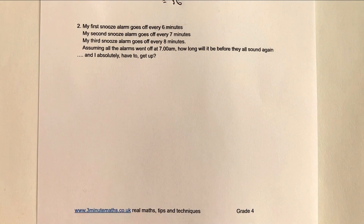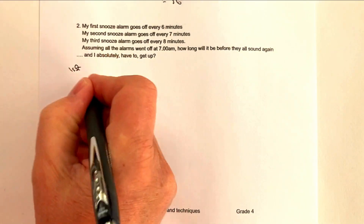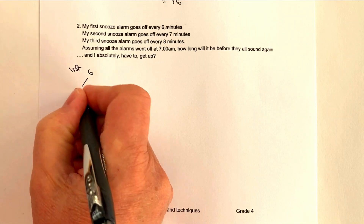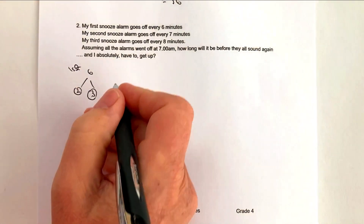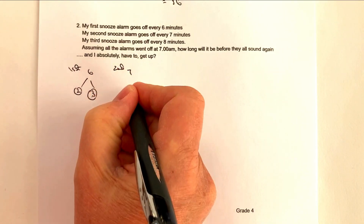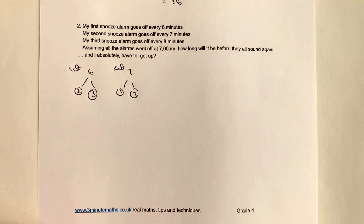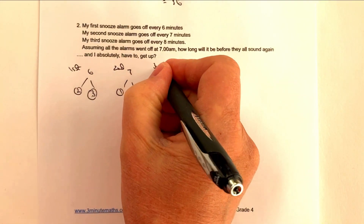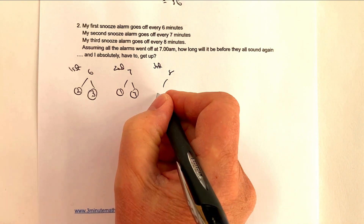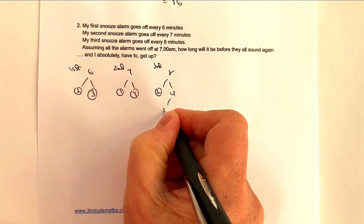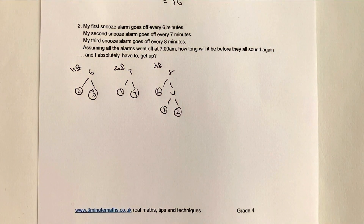We're going to use exactly the same principles. The first alarm is every 6 minutes, so the factor tree is 2 and 3. The second alarm is 7 minutes — factor tree is 1 and 7. The third alarm is 8 minutes — that's 2 times 4 and then 2 times 2. Hopefully that's no surprise.